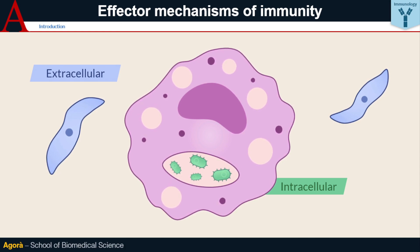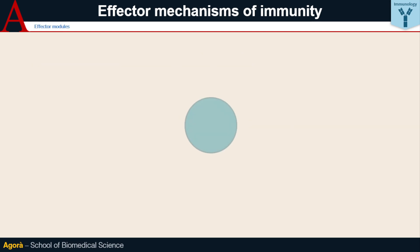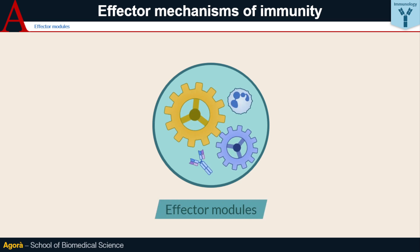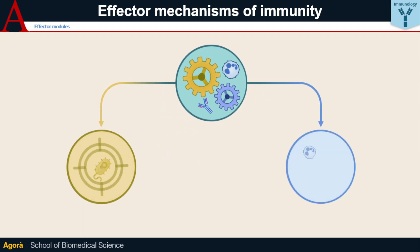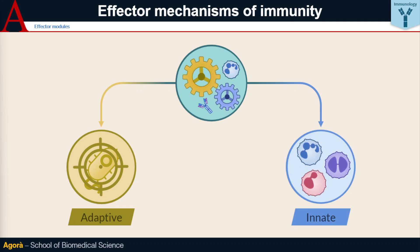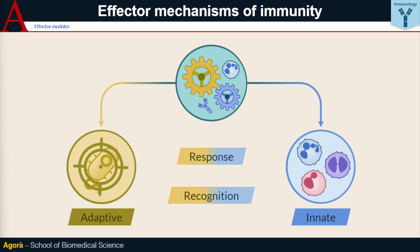The set of innate and adaptive cellular and humoral mechanisms that work together to achieve elimination of a certain type of pathogen is called the effector module or response type. When integrated, these modules may involve innate and adaptive elements that share specific recognition and response characteristics. This suggests that adaptive elements are nothing more than evolutions of existing innate elements that have been refined over the course of evolution.